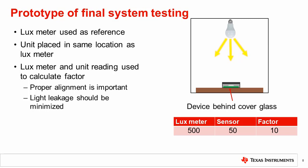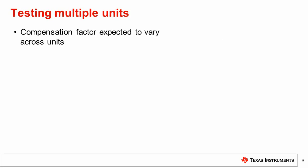Unit-to-unit variation can be caused by factors relating to both the cover glass and the system integration. For this reason, multiple integrated units should be tested, which we will discuss now. We have mentioned that variation is expected from a number of sources in the system. These include the cover glass itself and the positioning within the system. Due to these variations, the compensation factor is expected to vary across units.